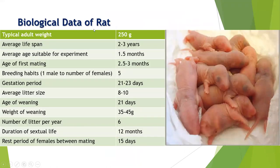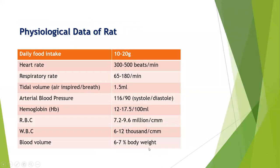Here are the biological data of rats. The standard data available includes average lifespan, age of mating, gestation period, average litter size, age of weaning, number of litters, and the estrous period of females between mating. This standard data is available in various references and standard books.